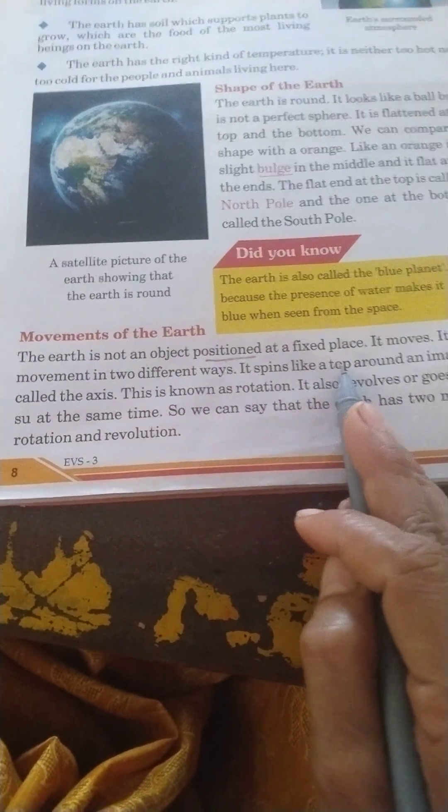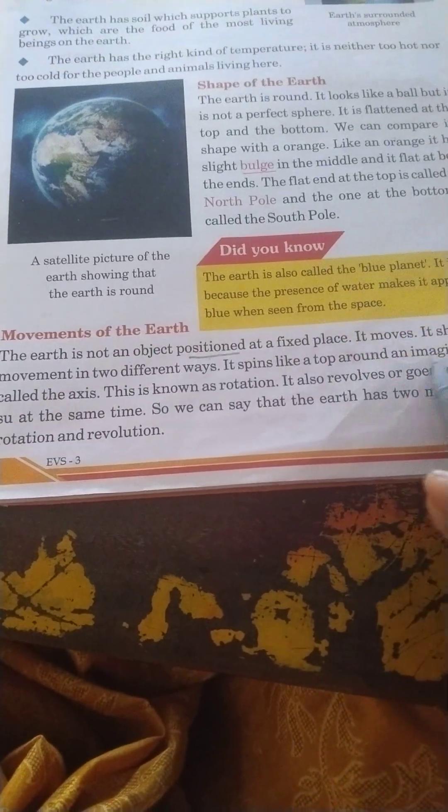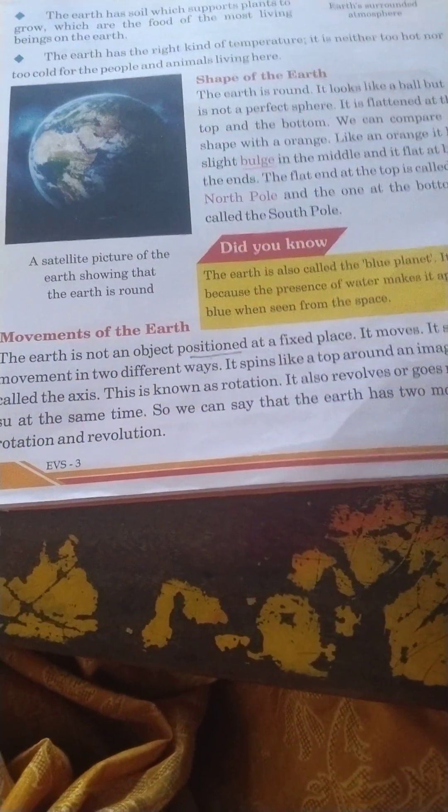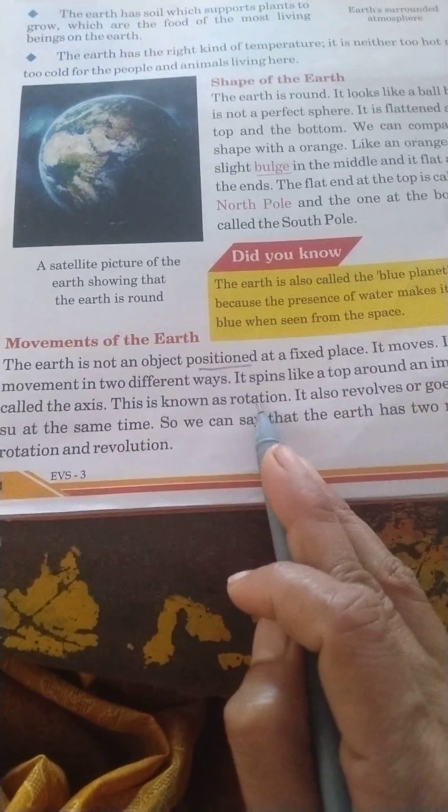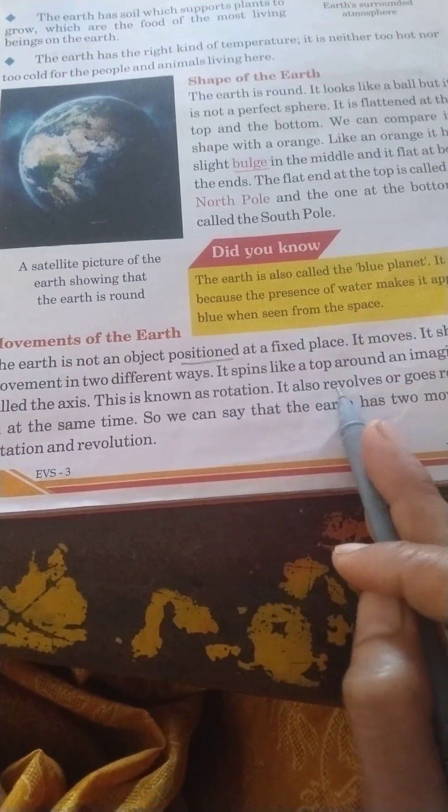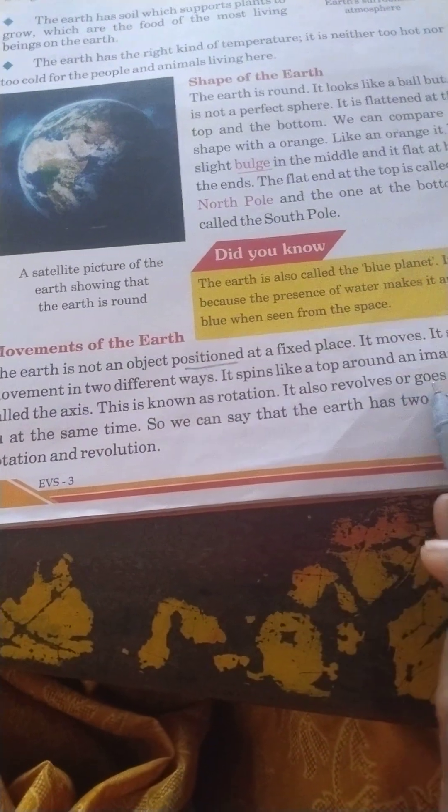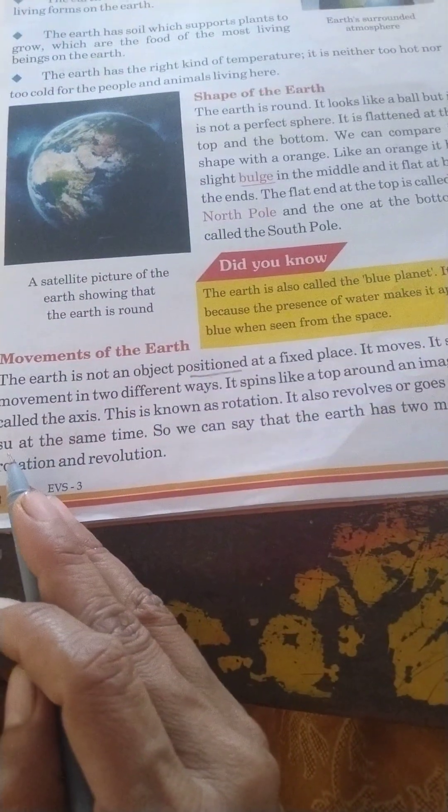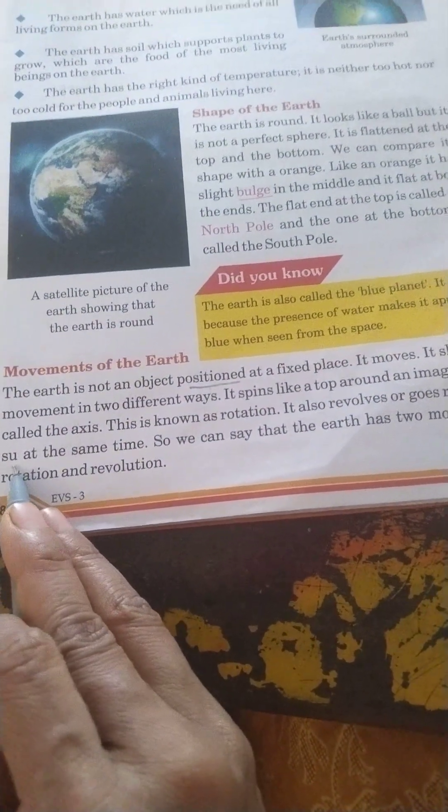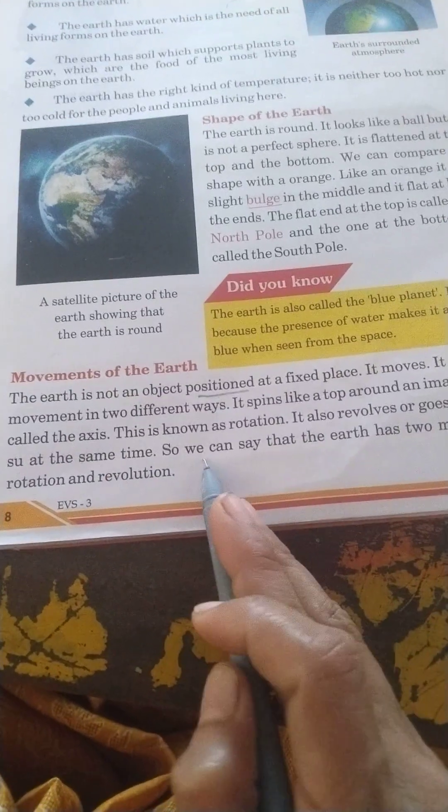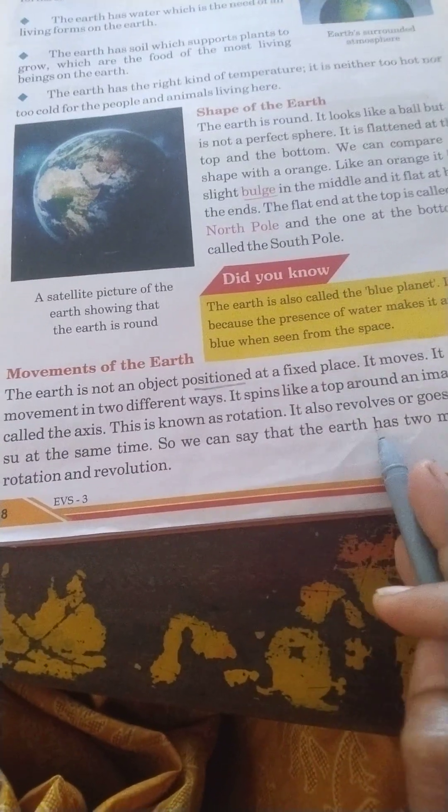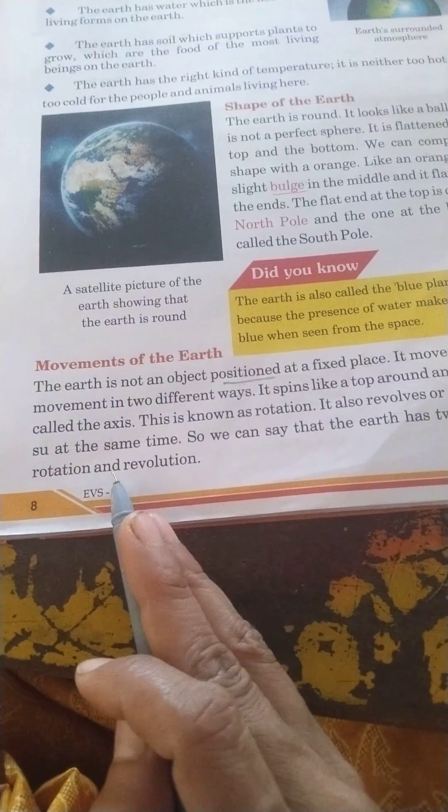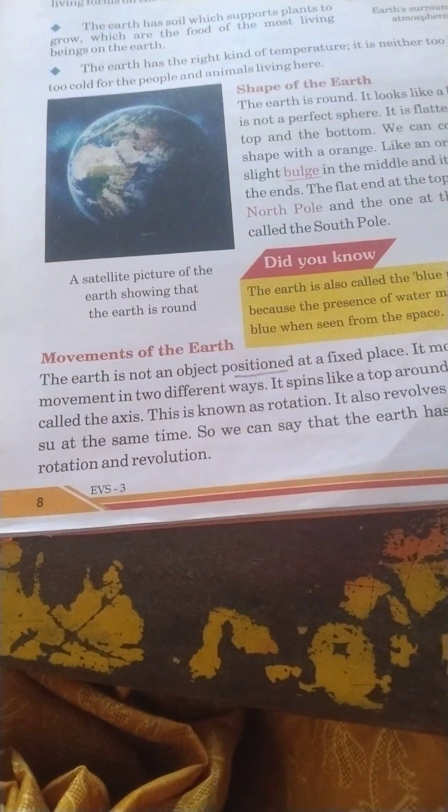The earth spins like a top around an imaginary line called the axis. This is known as rotation. It also revolves or goes round the sun at the same time. So we can say that the earth has two movements, rotation and revolution.